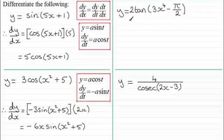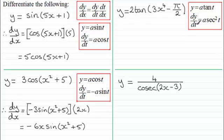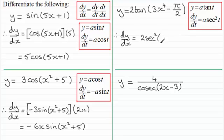Now for y equals 2 tan of all of 3x to the power 4 minus π/2, it has the form y equals a tan t, where t is 3x to the power 4 minus π/2. We should be familiar with differentiating the tan of something: if y equals a tan t, then dy/dt equals a sec squared t. Therefore dy/dx equals the differential of y equals 2 tan t, which is 2 sec squared t, where t is 3x to the power 4 minus π/2. We then multiply by dt/dx.